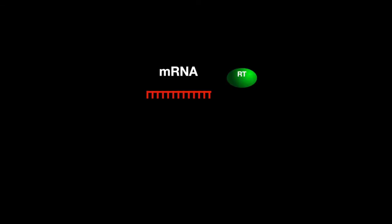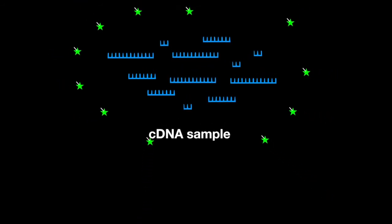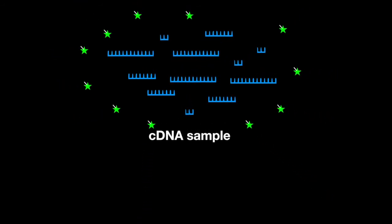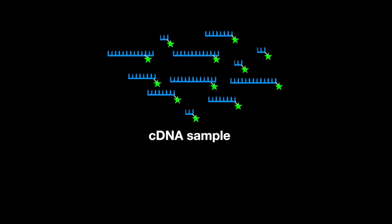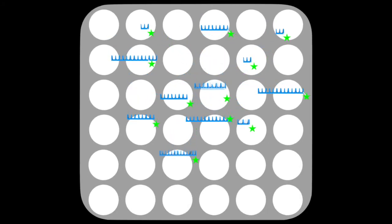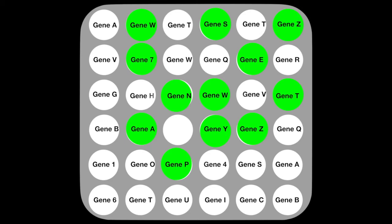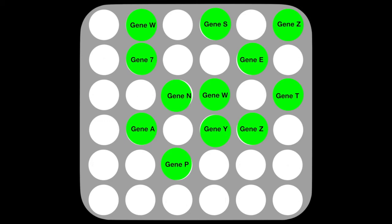A sample of mRNA is reverse-transcribed into cDNA. Different genes that are being expressed at the time of transcription are all turned into cDNA. The mixture of various genes as cDNA is then fluorescently labeled. The cDNA is then poured onto the plate, and the genes bind to the complementary strand in the respective well. The pattern of fluorescent wells are then analyzed by a computer to tell what genes are being expressed.